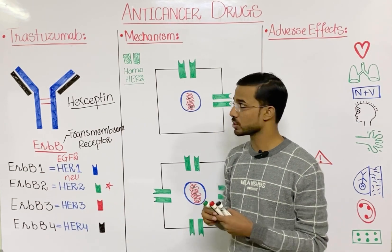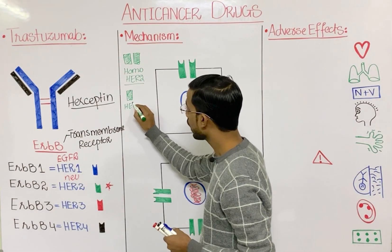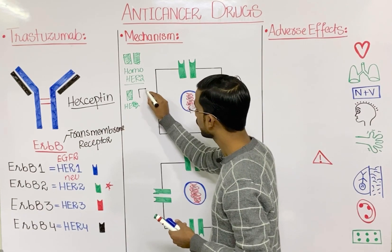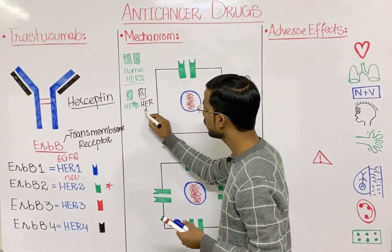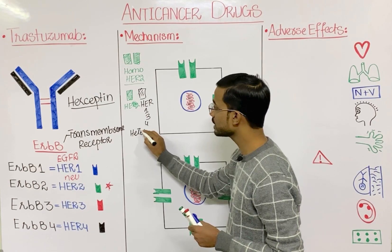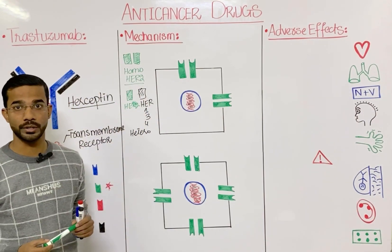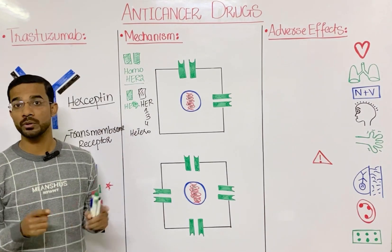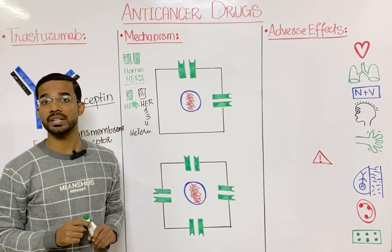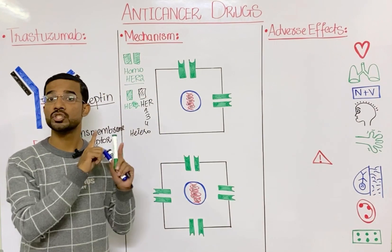If HER2 dimerizes with either HER1, HER3, or HER4, that is called heterodimerization — meaning one molecule is HER2 and the other is HER1, HER3, or HER4. In this lecture, we will focus on the homodimerization of HER2, meaning both HER2 molecules dimerize, because this dimerization is very important.